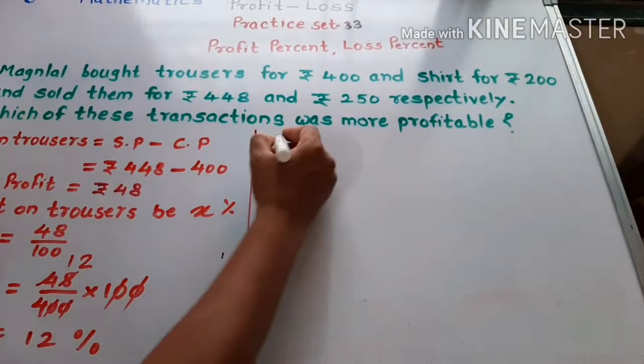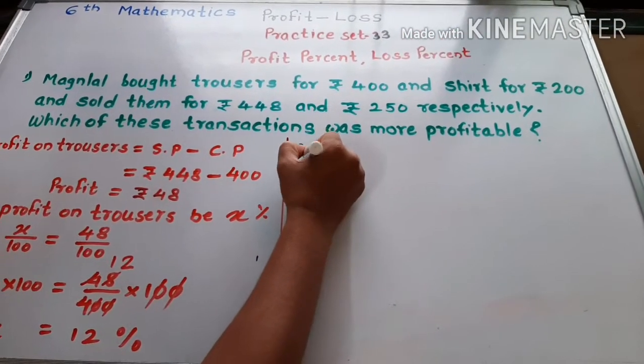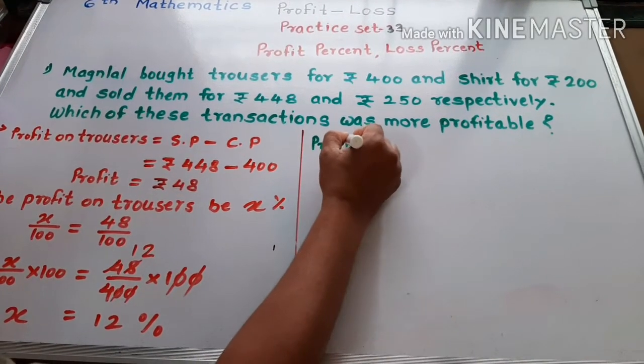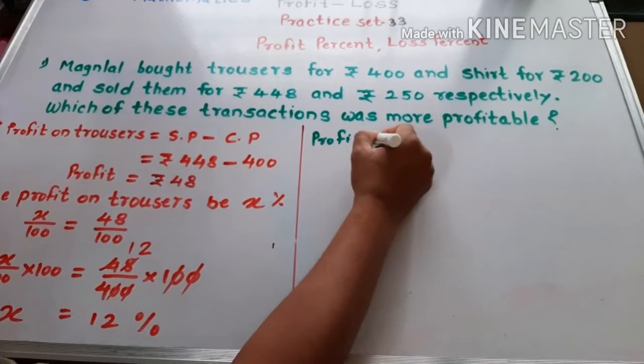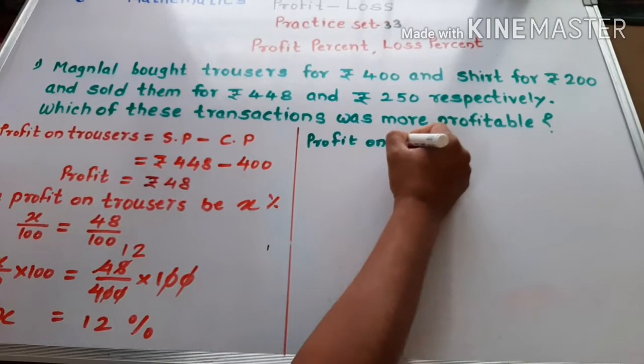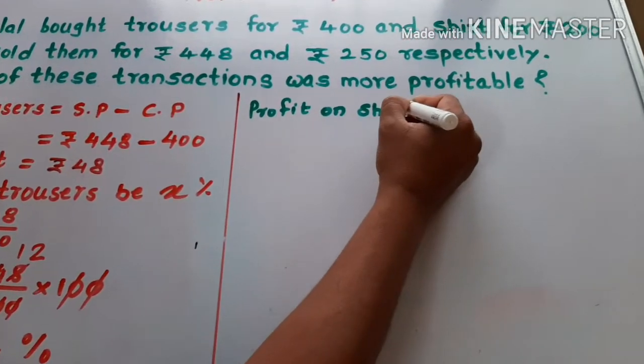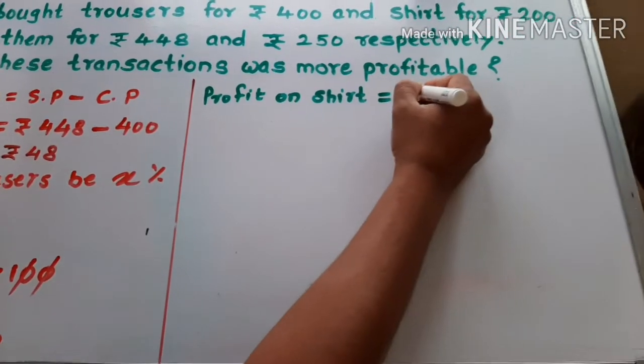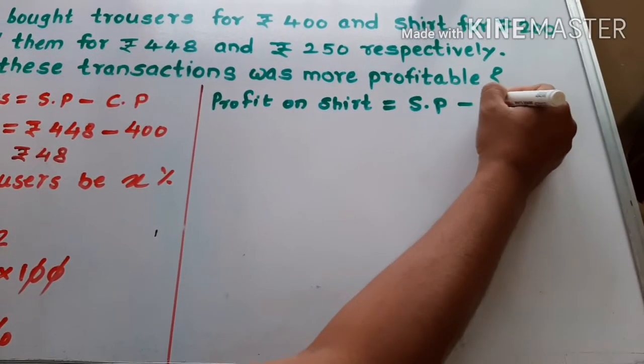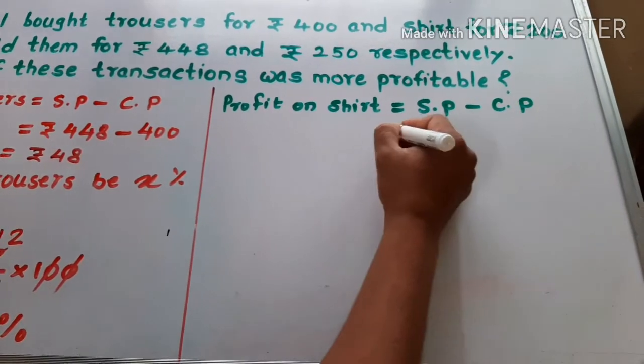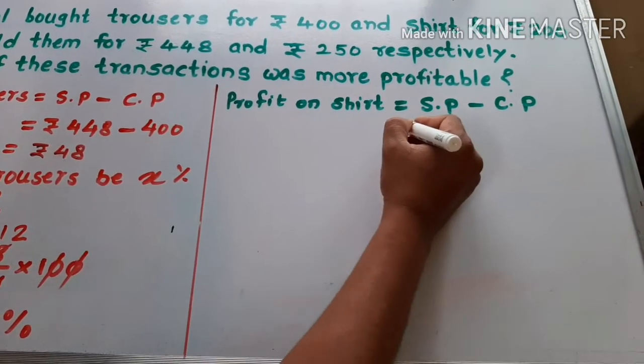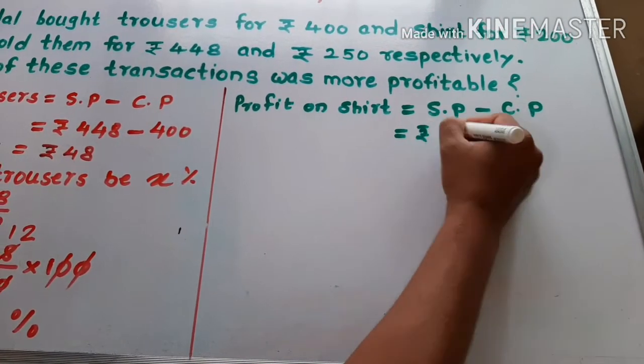Then find the profit on shirt. We write the formula, selling price minus cost price.